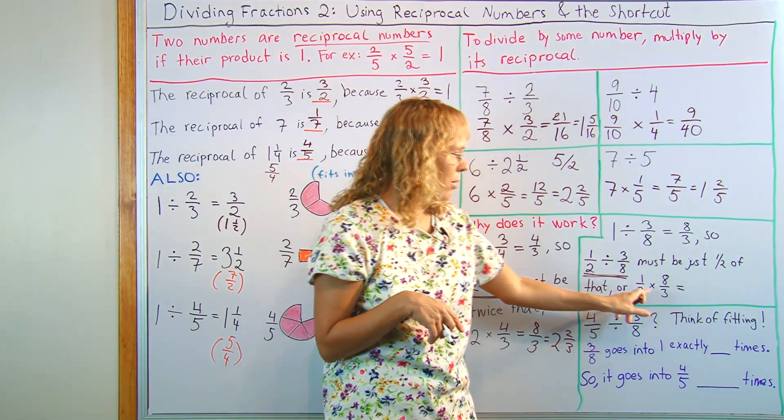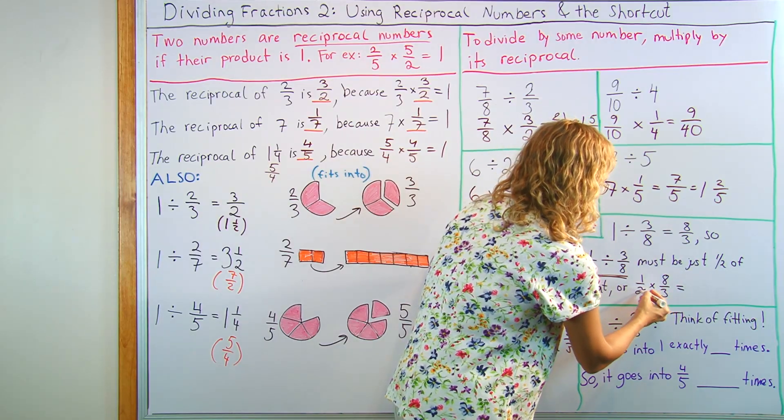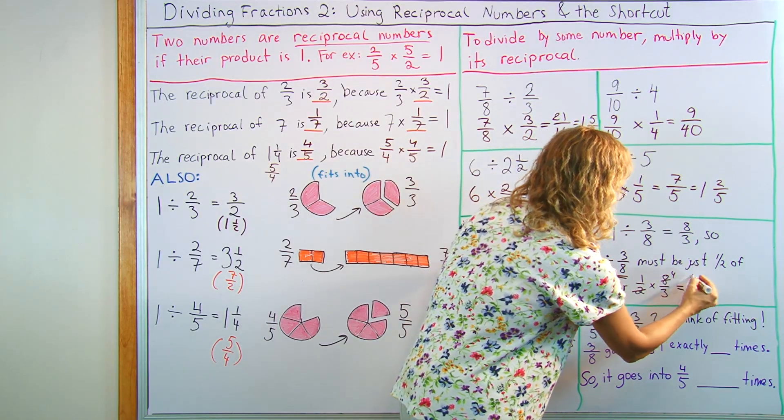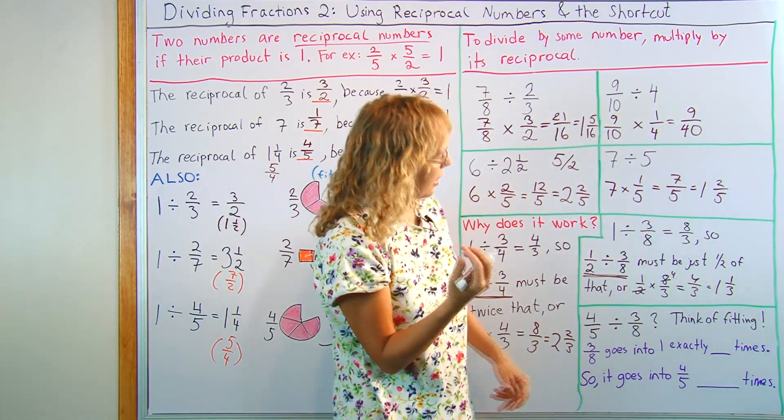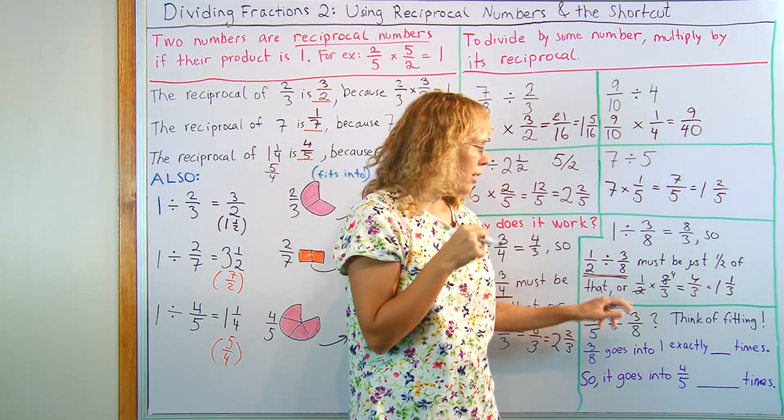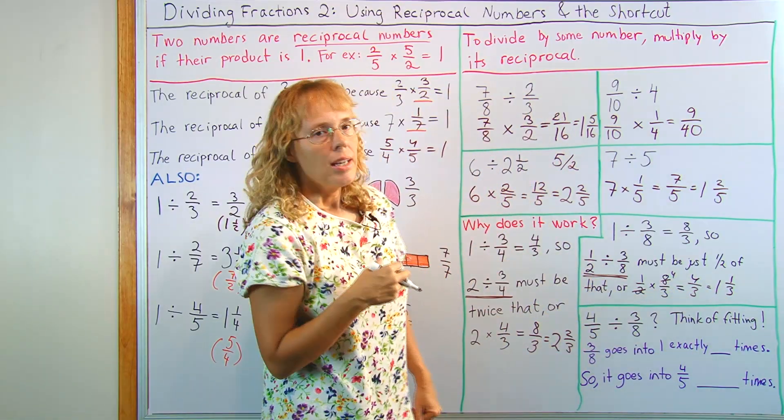Again, the division changed to multiplication and three-eighths was flipped. So I get here, I can simplify two. I get four over three, one and one-third times. That makes sense, if you think of three-eighths and one-half, three-eighths fit into one-half a little over one time.